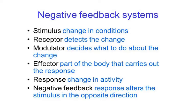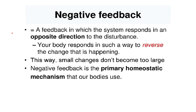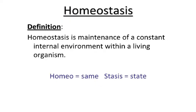Another way of explaining it: stimulus causes a change in conditions; a receptor detects the change; a modulator decides what to do about it; and an effector carries out the response. The response alters the stimulus in the opposite direction — this is negative feedback. The body responds in such a way as to reverse the changes occurring. For example, if you enter a very hot room, vasodilation and sweating occur to reverse the heat, keeping your body at 37 degrees Celsius. Homeostasis means 'homeo' (same) plus 'stasis' (state) — maintaining the same state, such as blood pH, water content, blood glucose, and body temperature.